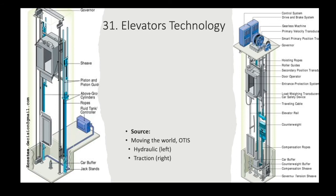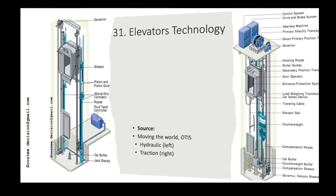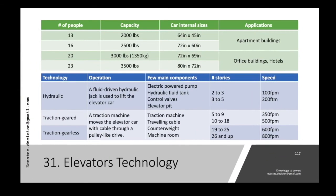This comparison table helps you understand which type to use based on building height. For smaller-story buildings you'll use hydraulic; for higher-story buildings you'll use traction, either geared or gearless. In terms of speed, hydraulic elevators are very slow, while traction elevators can reach up to 500 feet per minute.